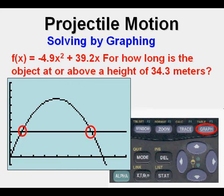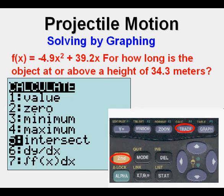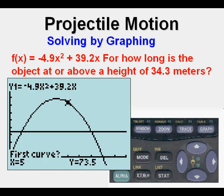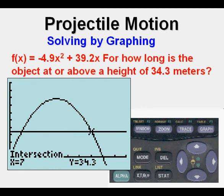We can find those two points, one of them by pressing 2nd, trace, 5, enter, enter, enter, and we get an intersection at x equals 7. So that would be 7 seconds.